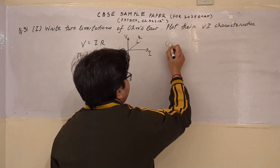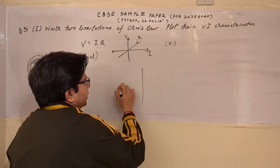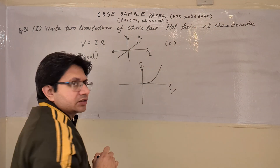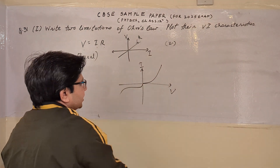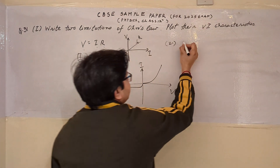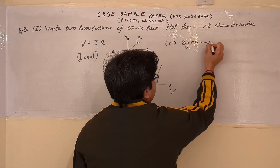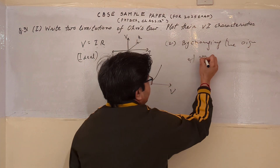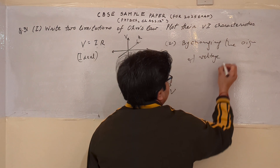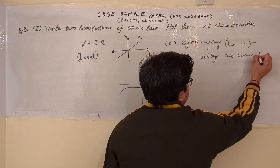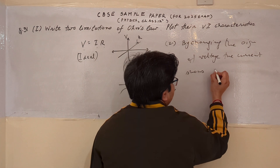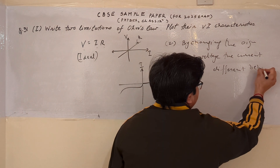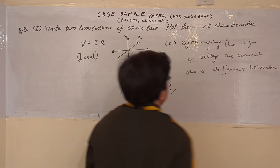But in a practical case, for example if we take a diode, we can plot the diode characteristic curve. This is current, this is voltage. In forward bias this is the characteristic, and in reverse bias this is the characteristic. So we can say that by changing the sign of voltage, the current shows different behavior.